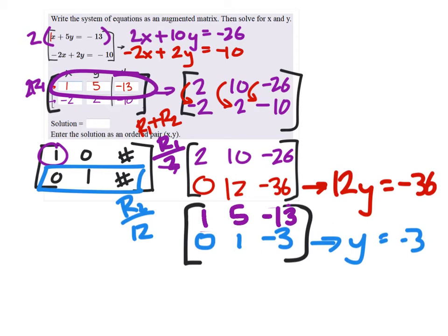Now, again, one of the things about this top equation is x plus 5y equals negative thirteen. Right? Some of you guys are just going to want to go in and replace y with that negative three and solve. I'm okay with that. Solve for x like that. But if you continue the matrix...